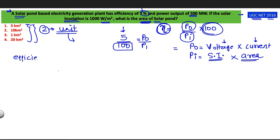Efficiency is given as 5%, power output is given as 500 megawatt. Now here megawatt is given so I am going to convert it into watt. 1 kilowatt equals 10 to the power 3 watt. 1 megawatt equals 10 to the power 3 kilowatt. So 1 megawatt will be equal to 10 to the power 6 watt.